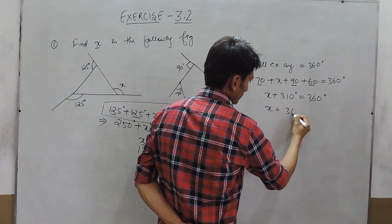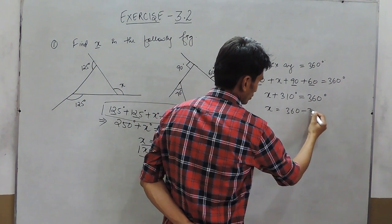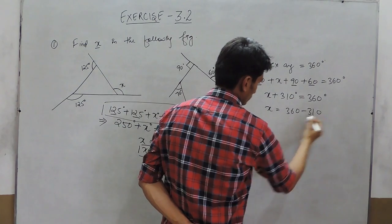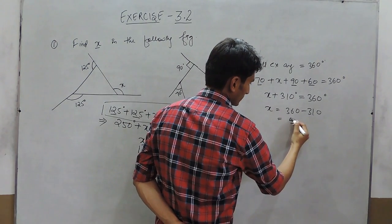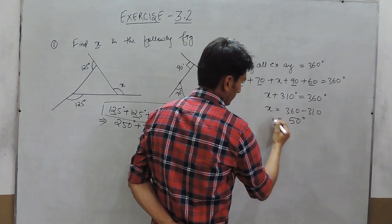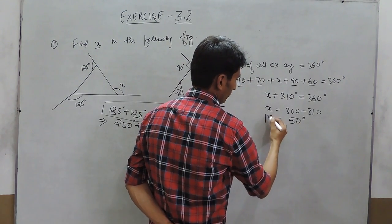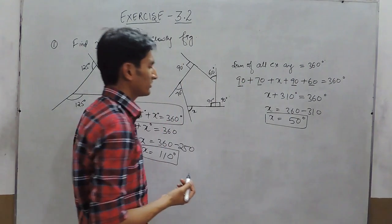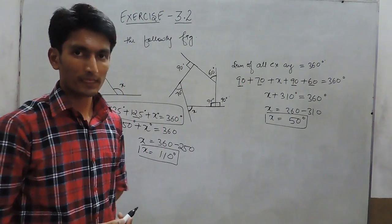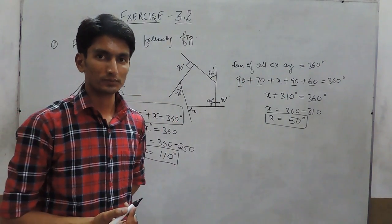So x will be equal to 360 minus 310, which gives 50 degrees. The value of x must be 50 degrees. Thank you.